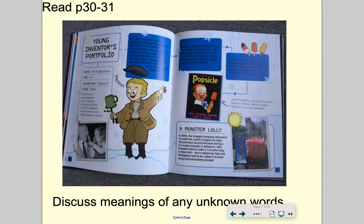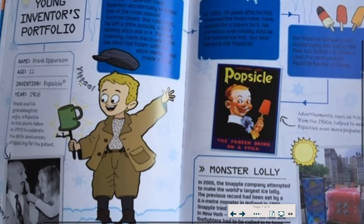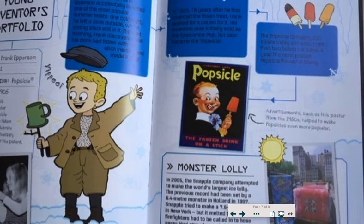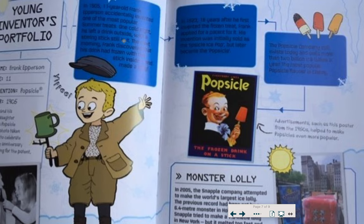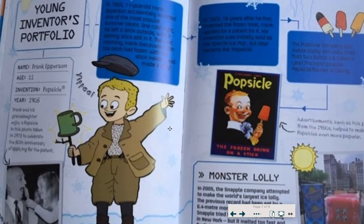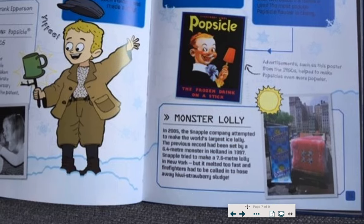Our next inventor is Frank Epperson, and he was just 11 years old when he invented the popsicle in 1905. Who doesn't love a good popsicle? Which you may know is just a nice lolly. We don't use the word popsicle very often, but it is literally a type of frozen lolly. A little boy just 11 years old invented that — how cool is that? There's the story of his experience and what he invented. There's even a monster lolly! I wonder if there's a word here in bold to look up in our glossary.